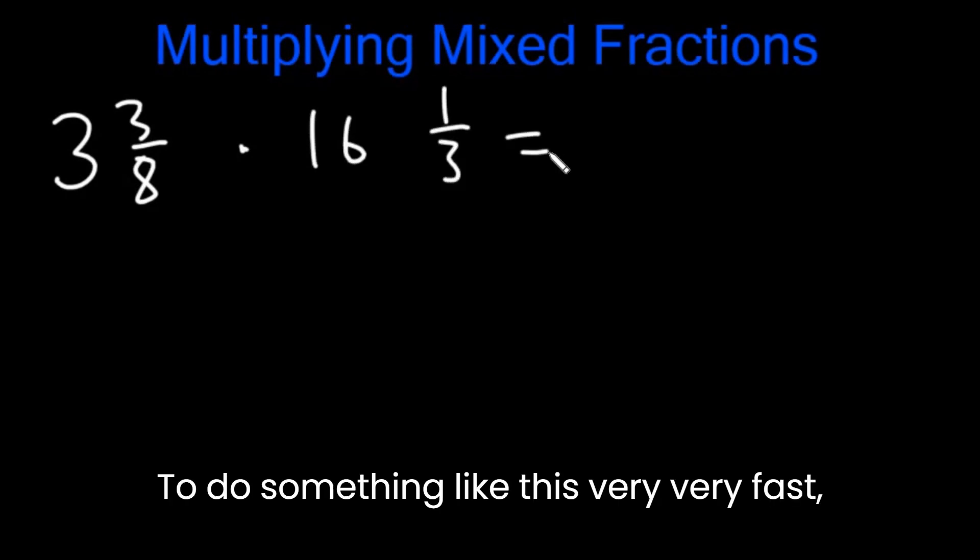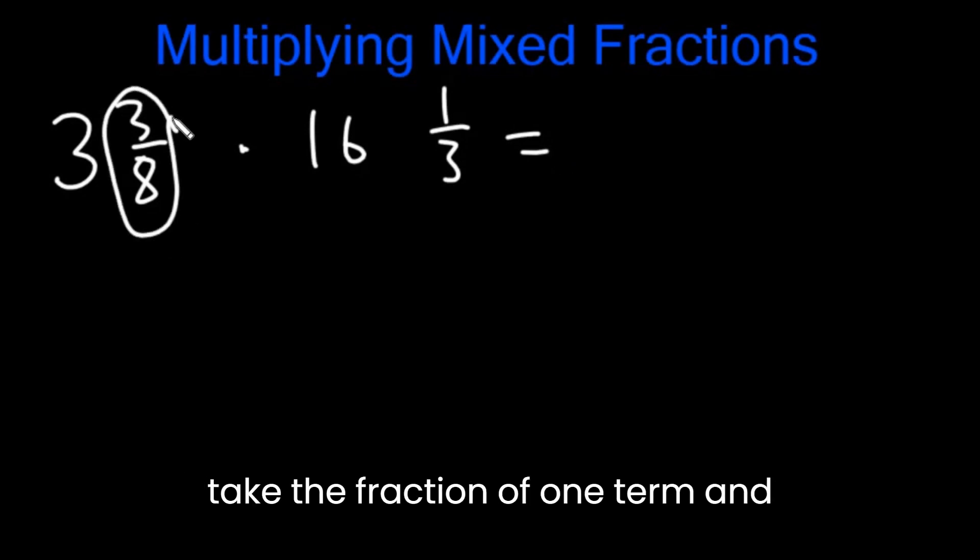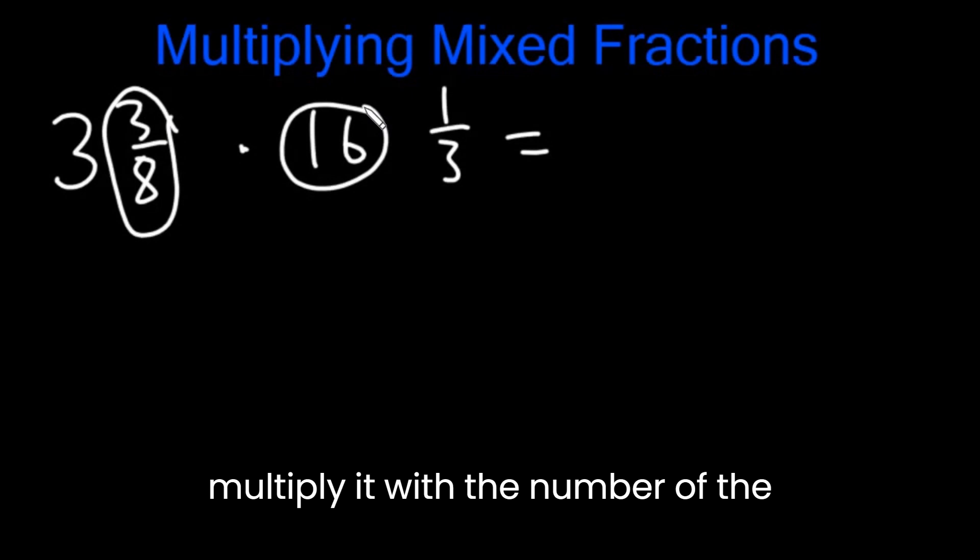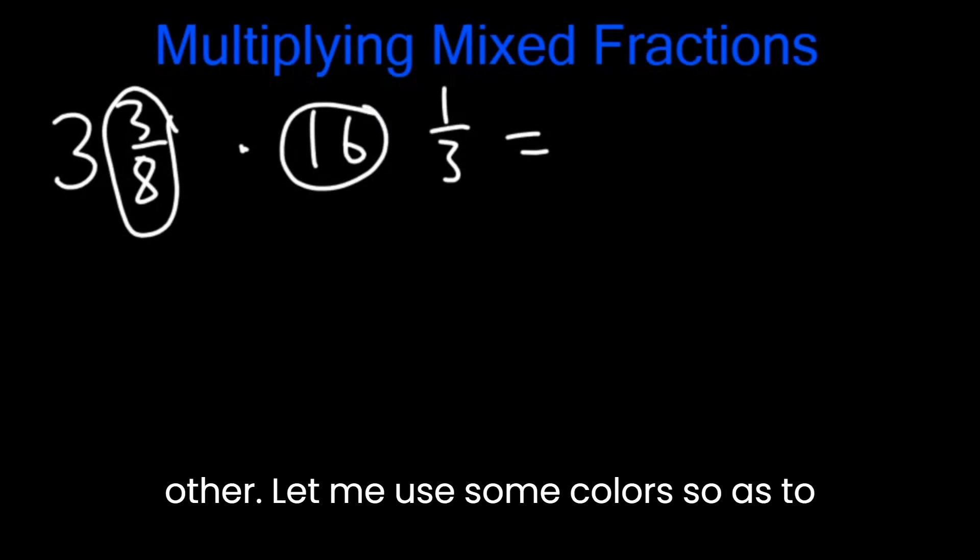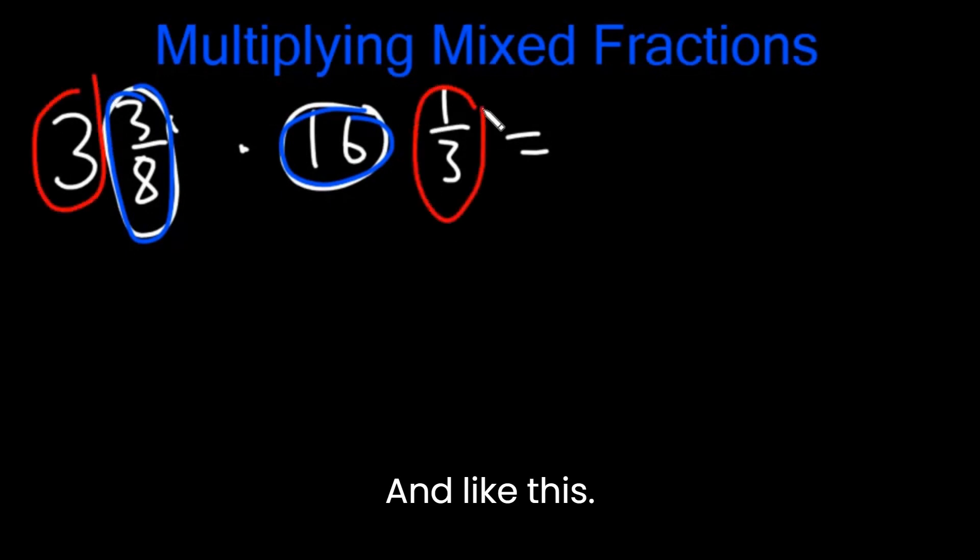To do something like this very, very fast, what you're going to do is you're going to take the fraction of one term and multiply it with the number of the other term. Let me use some colors to make it a little bit more easier to understand, like that and like this.